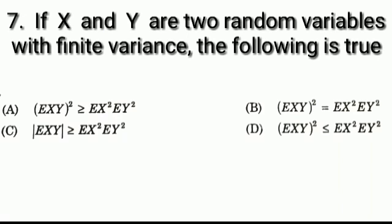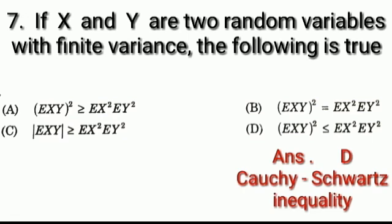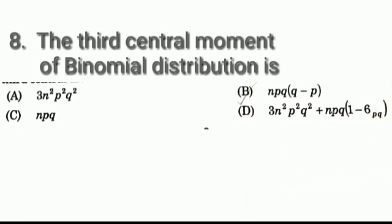Question number 7: If x and y are two random variables with finite variance, which relation is true? Question 8: The third central moment of a binomial distribution — Options: A: 3n²p²q², B: npq(q−p), C: npq, D: 3n²p²q² + npq(1−6pq). Answer: B.